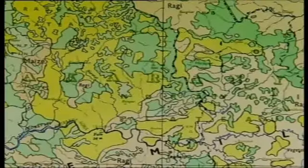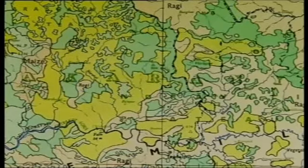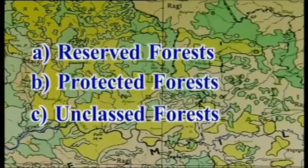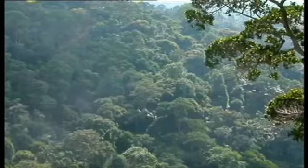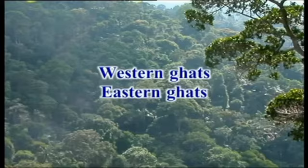The plantation areas are distributed around the Mercara region and the Chikmagalur region. The crops planted in the plantation areas are coffee and rubber. The forest areas include reserved, protected, and unclassed forests. Reserved forests are seen all along the Western Ghats and also in the Eastern Ghats. Protected forests are seen west of Mercara and near Belgaum.